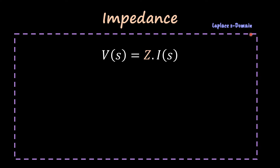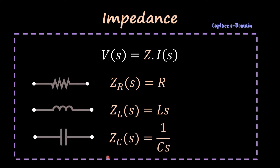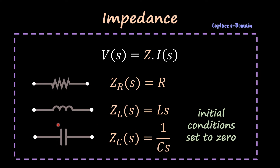Another important concept is impedance. You can think of impedance as kind of the resistance in the s-domain, but it's a bit more than resistance because now we also represent capacitors and inductors in this domain — you can treat capacitors, inductors, and resistors all as resistors in the s-domain. The impedance for a resistor is just R; for an inductor it's L times s; and for a capacitor it's 1 over Cs. These values assume initial conditions are set to zero, so there is no initial energy.